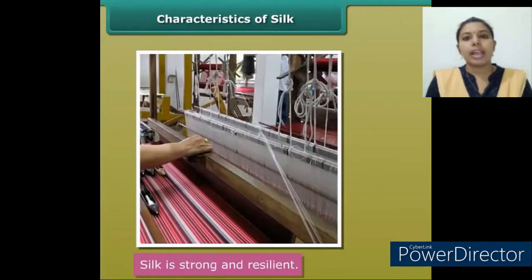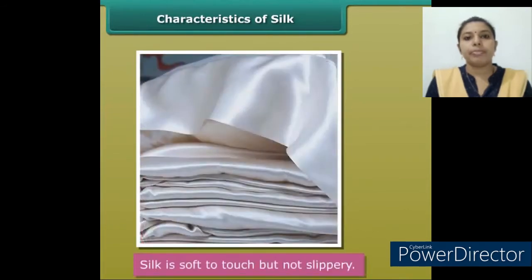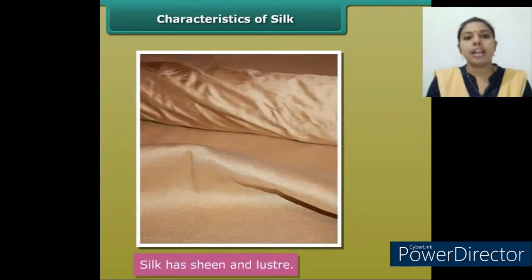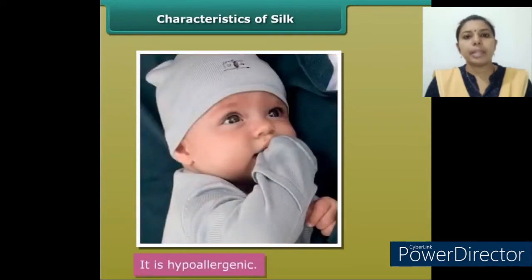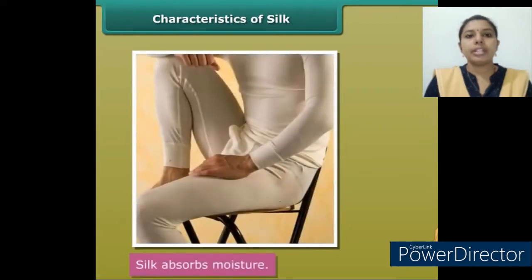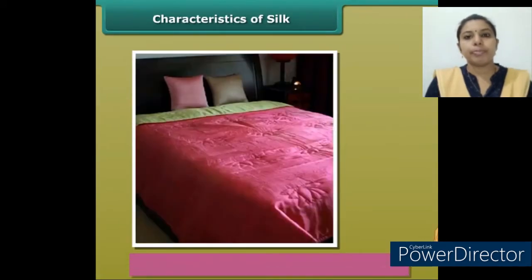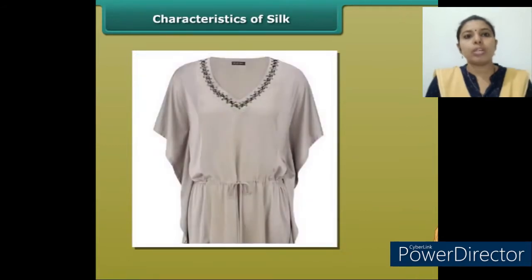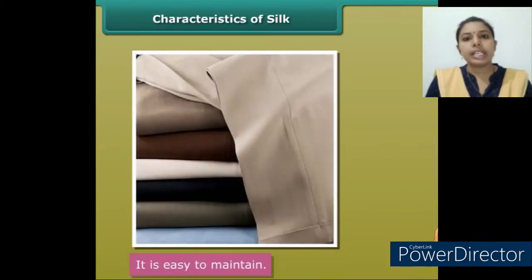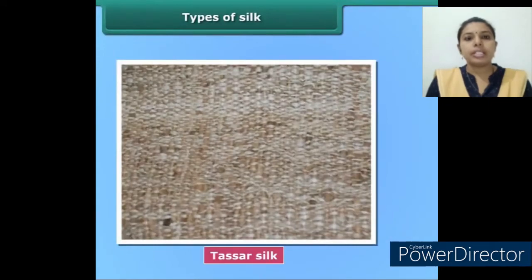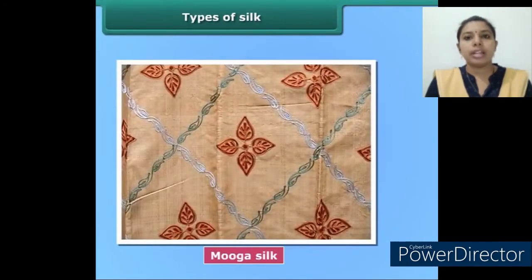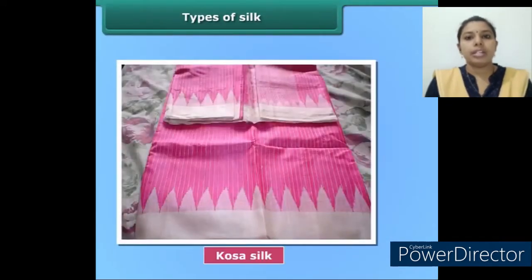Silk is a strong and resilient fiber. It's soft to touch but not slippery, and it has sheen and luster. It is hypoallergenic and absorbs moisture. Silk is warm in winters and cool in summers. It is easy to maintain. Tasar silk, munga silk, and coarser silk are different varieties of silk.